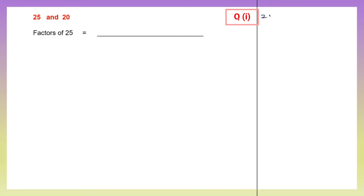Let's write all the factors of 25. 1 into 25 is 25. What else will give us 25? 5 fives are 25. That's it. So the factors of 25 are 1, 5 and 25.